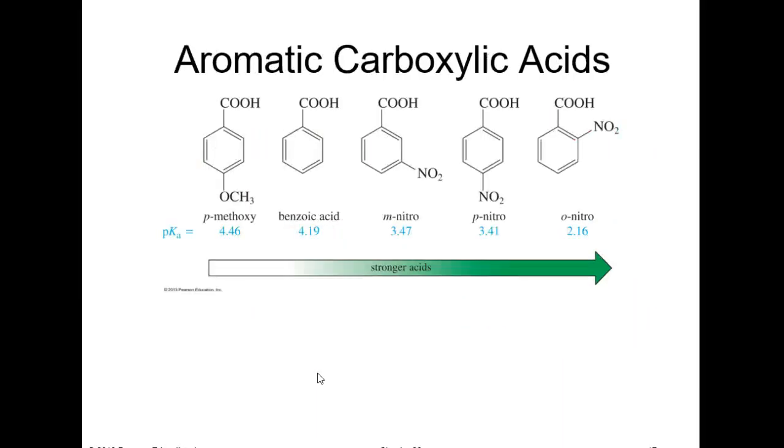Aromatic acids, same type of thing. Methoxy is a donating group. Nitros are withdrawing groups. You also have more resonance structures. Remember from the aromatic chapter, these electrons actually will go in here and do a resonance structure. Notice the electron flow is going towards the carboxylic acid.